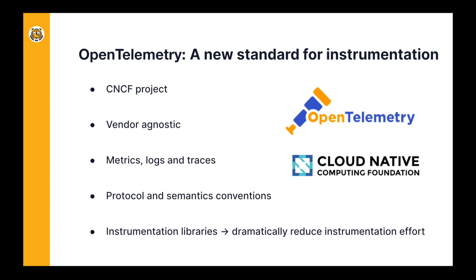It also opens the door for engineers creating libraries, frameworks, and tools that other developers use to build their applications, to add instrumentation into the source code. For example, Kubernetes has started adding OpenTelemetry instrumentation into their code. Second, it's a standard that includes the three key telemetry signals — metrics, logs, and traces — that share metadata and tags so you can more easily correlate them. It also defines a unified protocol and semantic conventions, making interoperability much easier. And finally, it provides libraries that do automatic code instrumentation, dramatically reducing the effort required to instrument your code.